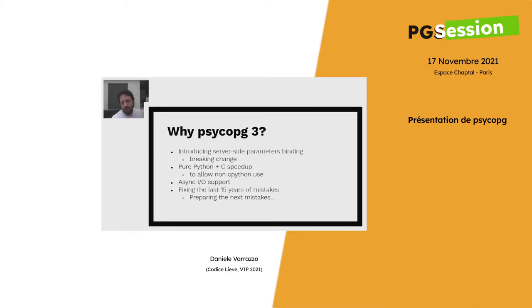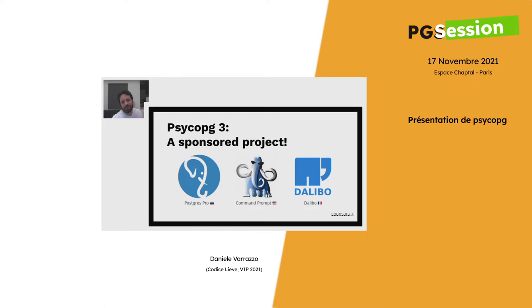The speedup module only reimplements the hottest paths — the most used functions. Psycopg 3 supports asynchronous communications and fixes a lot of mistakes we've been able to make over 15 years. It was also sponsored by companies who were interested in actively supporting the free software systems they use in their business. I'm particularly grateful to Postgres Pro from Oleg Bartonov, Command Prompt from Joshua Drake, and Dalibo, which is also one of the major contributors with people actively writing code for Psycopg.